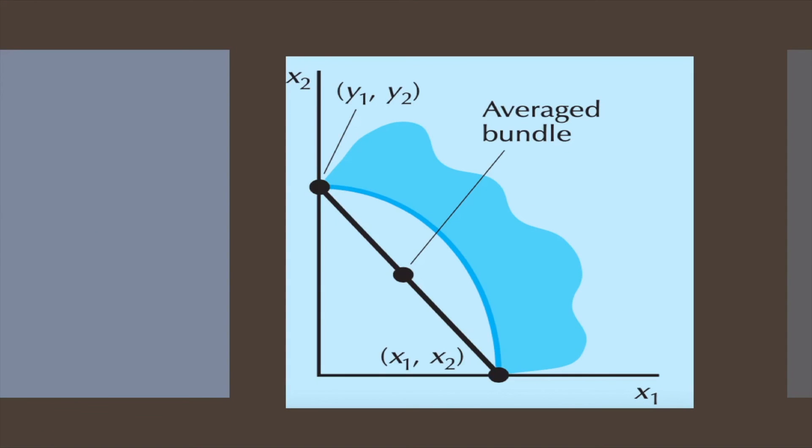This figure at the same time shows concave preferences. Here averages aren't preferred to extremes. The consumer prefers to consume the extreme bundles.